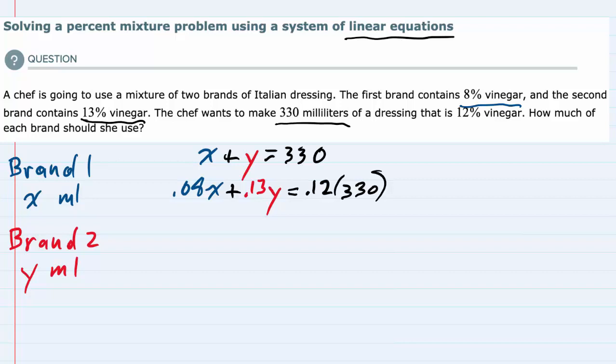Now that we have our two equations, I'll clean up this second equation by multiplying the right-hand side. 0.12 times 330 is 39.6, so our equation becomes 0.08x + 0.13y = 39.6.